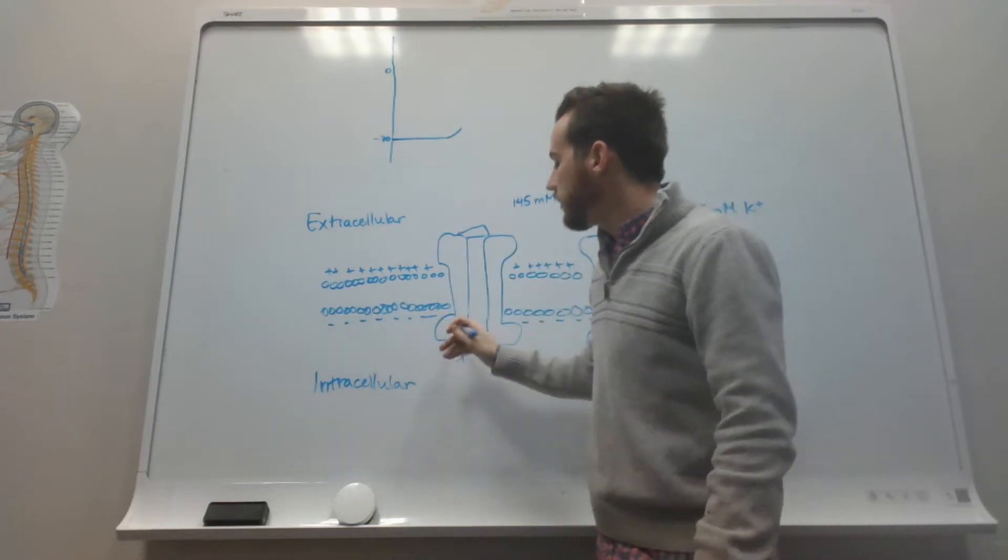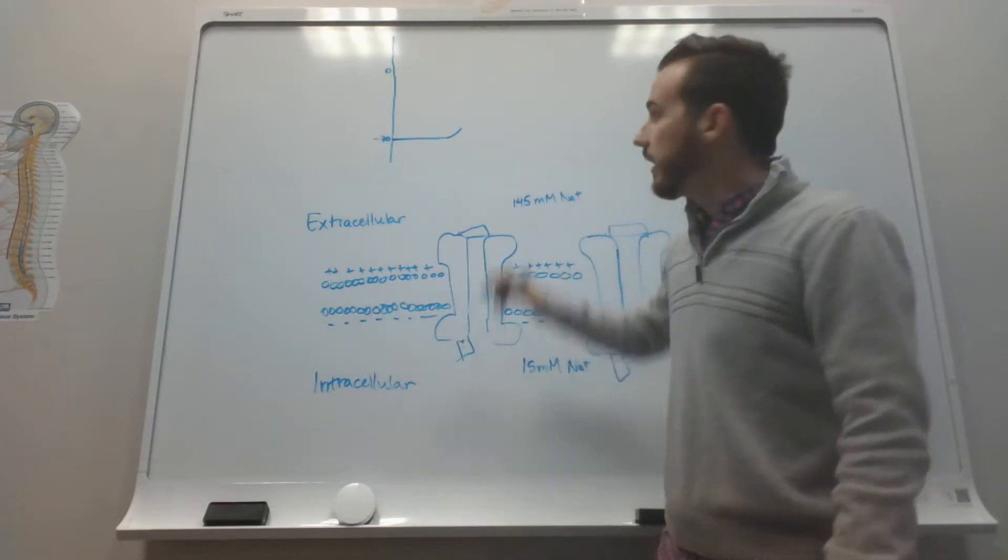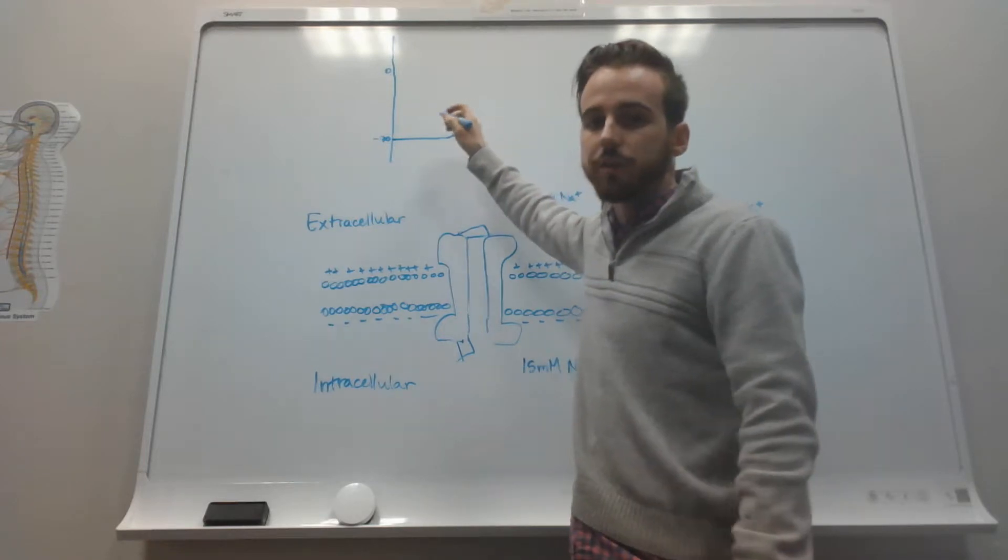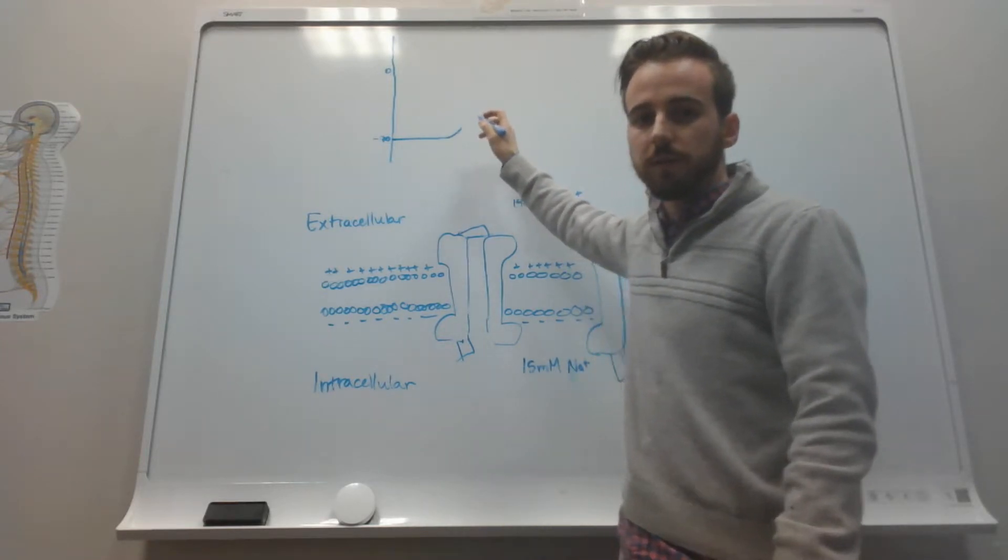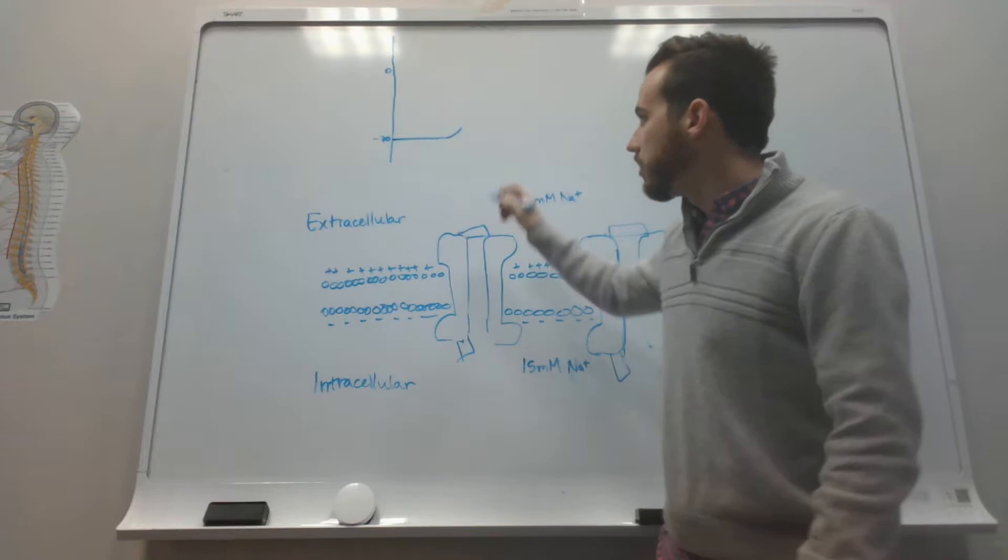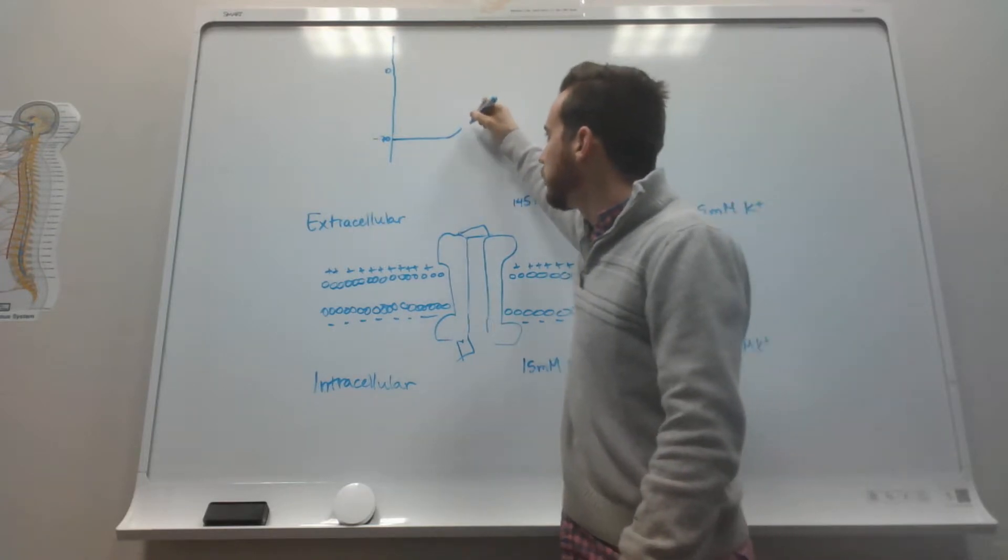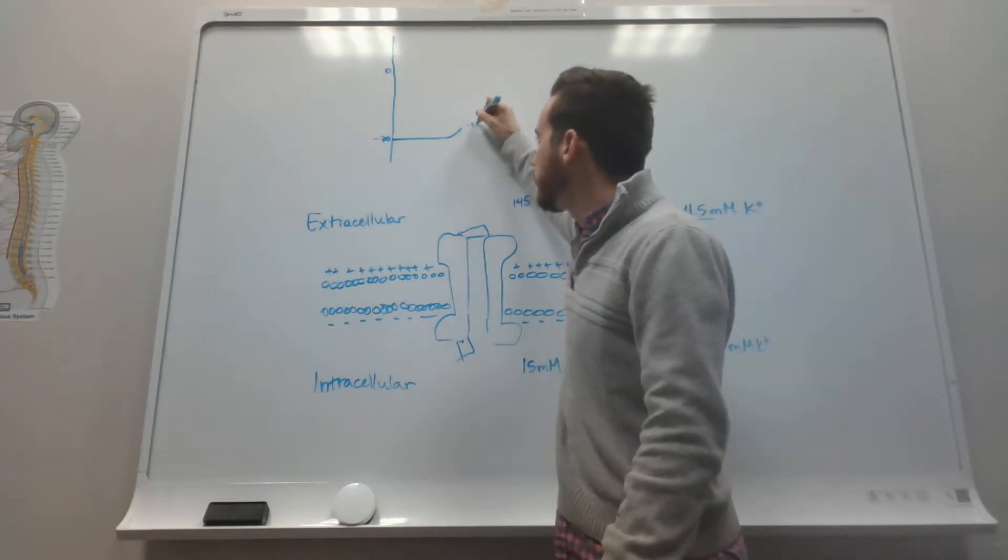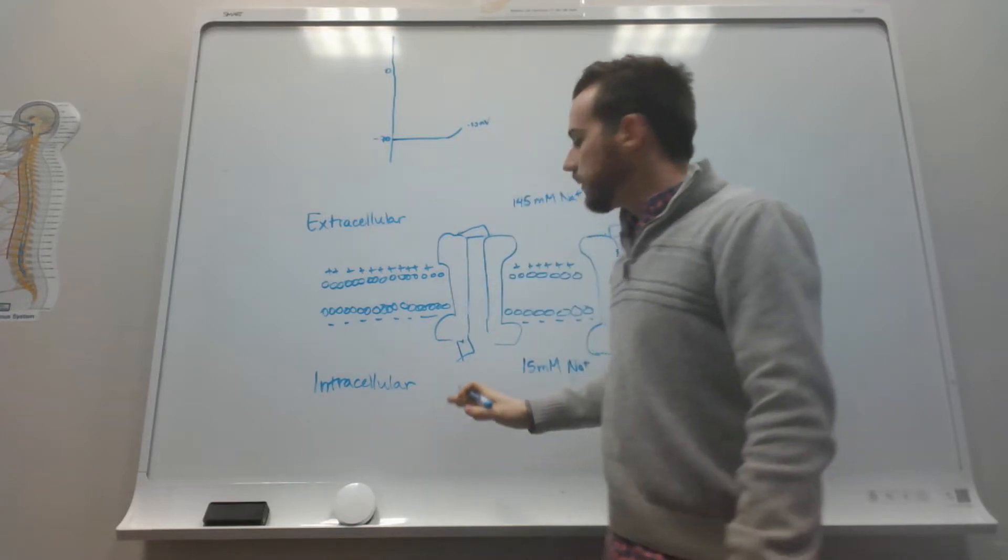Once the positive charges get here, if it depolarizes to something called the threshold membrane potential, then magic happens. Threshold membrane potential typically in a neuron is about negative 55 millivolts.